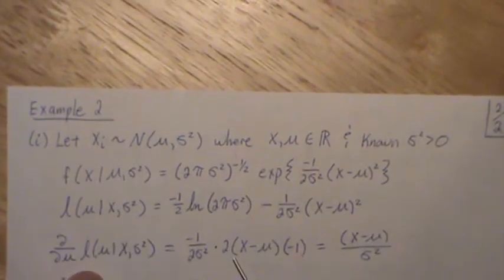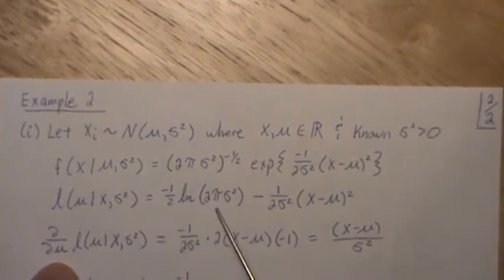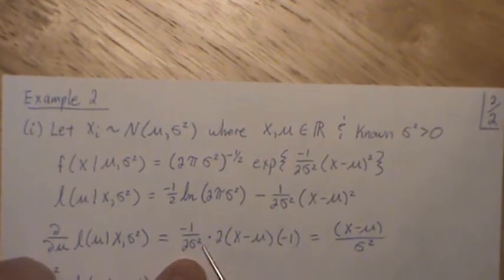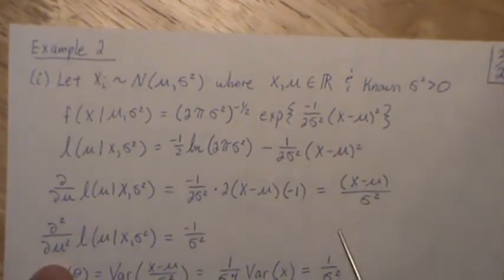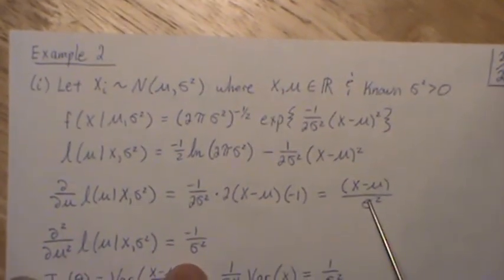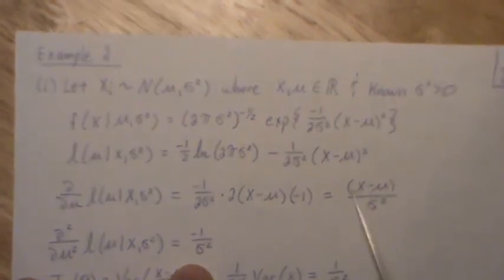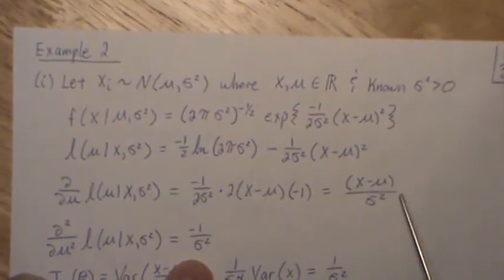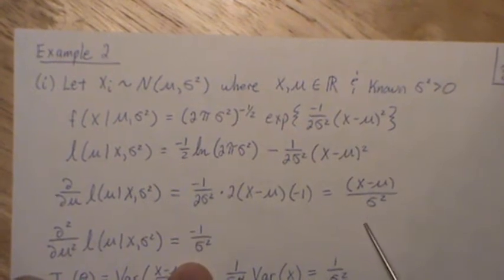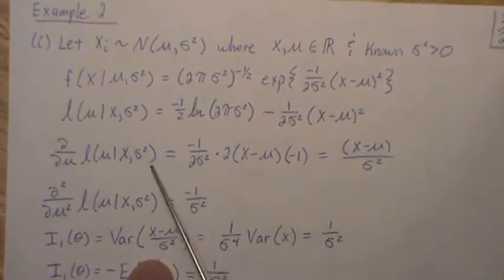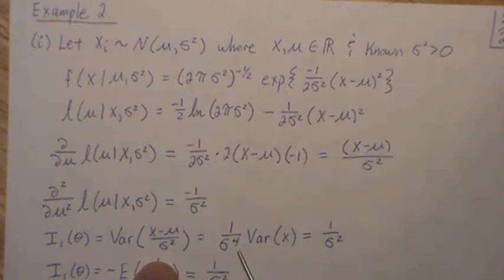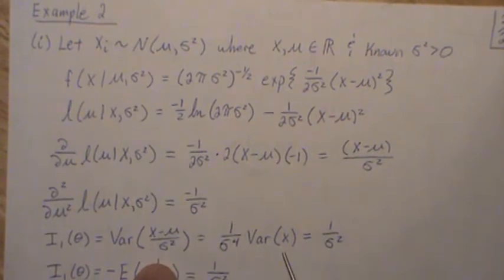Now the derivative with respect to mu: there's no mu in the first piece, so it's constant and drops away. Then for the second piece, you bring the two down, subtract the exponent, apply the chain rule with minus one. This simplifies. Now the second derivative: the derivative of this constant goes away, and we're left with minus one over sigma squared. So the Fisher information for a sample size of one is the variance of the first derivative. The sigma squared comes out to the fourth power. Constants don't play a part in variance, so we just get the variance of x, which is sigma squared. One of those cancels and we're left with one over sigma squared.